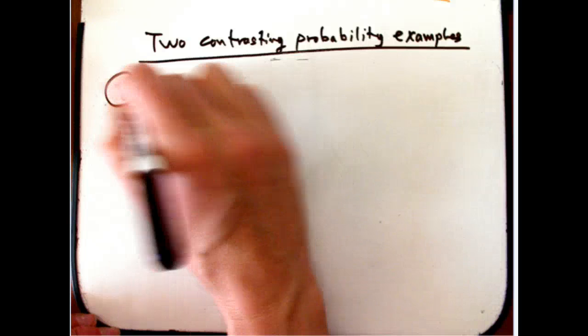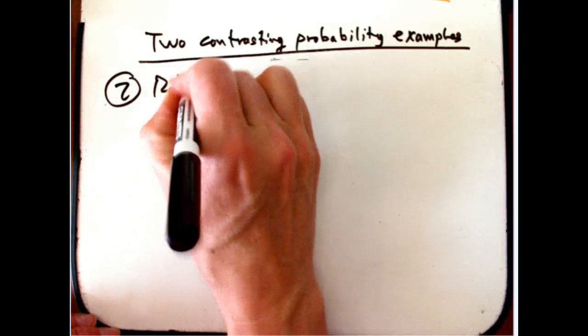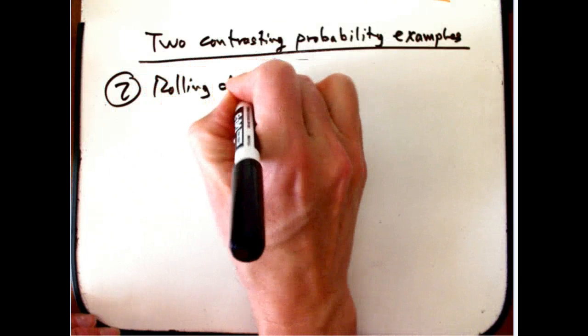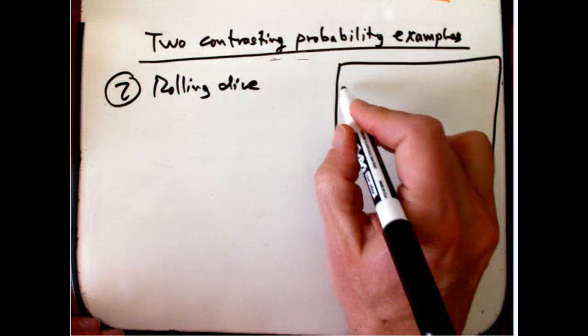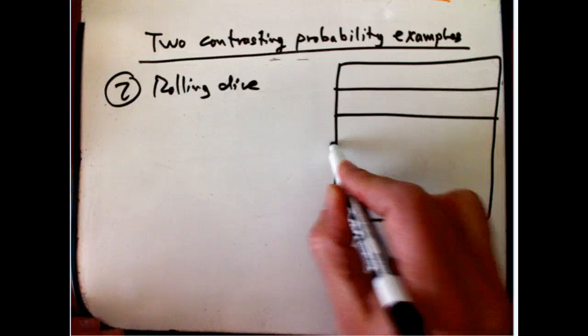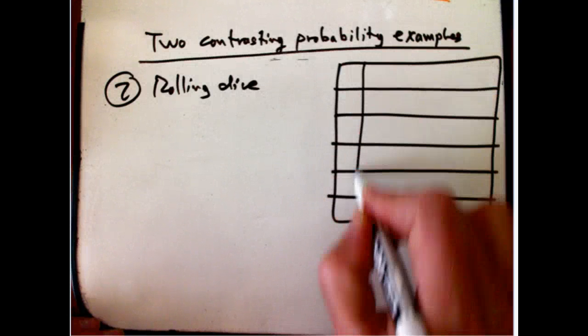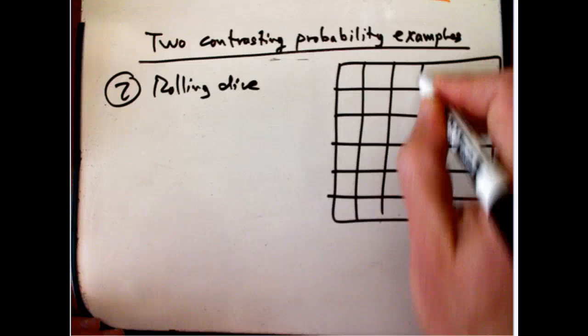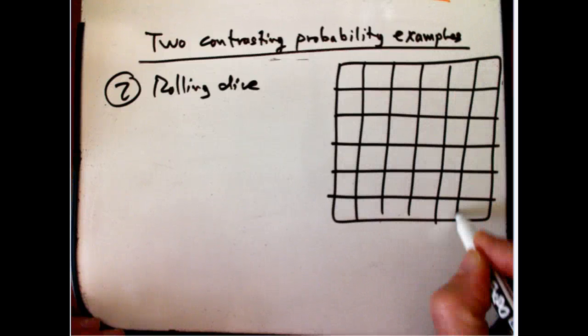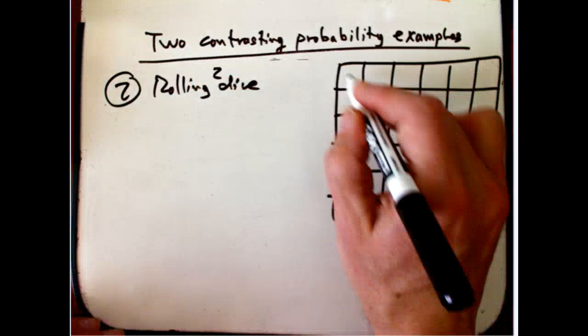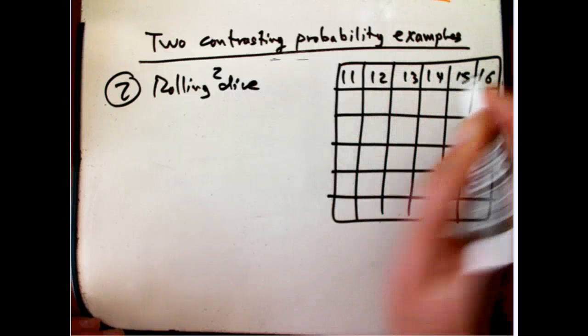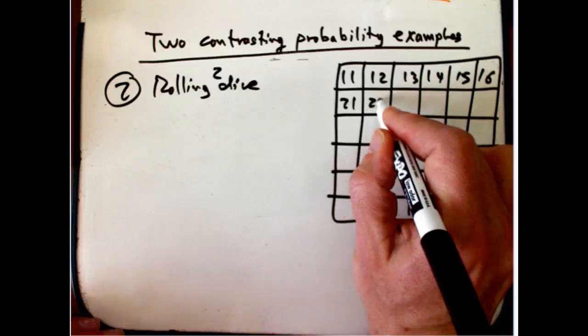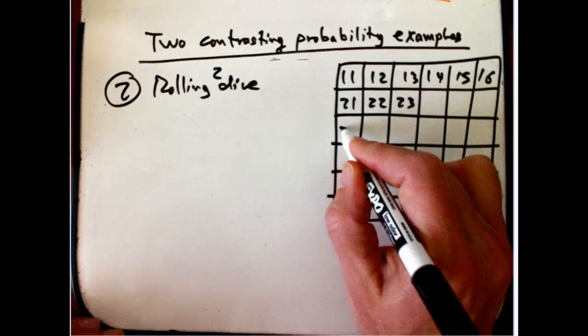So, second example. Rolling dice. I almost shouldn't have erased my sample space, but it's kind of small anyway. And it's different notation now, just a little. I'm rolling two dice. Six-sided dice. One, one, one, two, one, three, one, four, one, five. Here's the sample space. Again, this is so small I can write it all out.